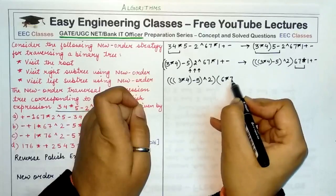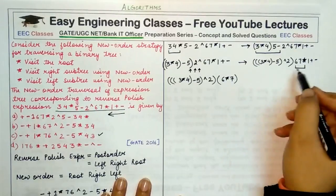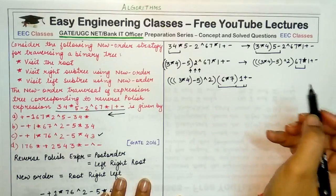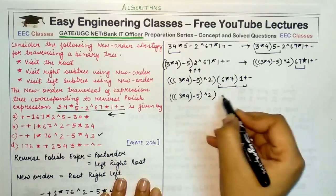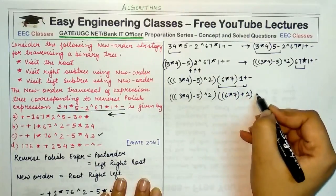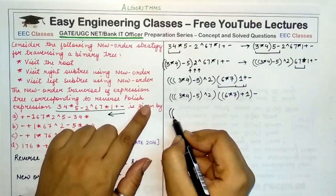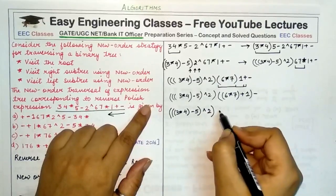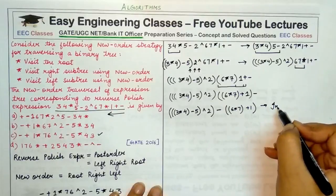Since every operator is a binary operator corresponding to two operands, we get (6 * 7). Then one is one operand, (6 * 7) is the other, and plus is the operator, giving (6 * 7) + 1. The only operator left is minus, placed between the two major brackets: ((3 * 4) - 5) ^ 2 - ((6 * 7) + 1). This is our full infix expression.